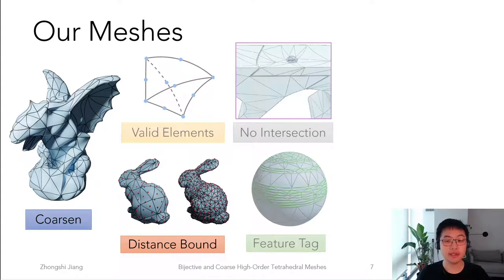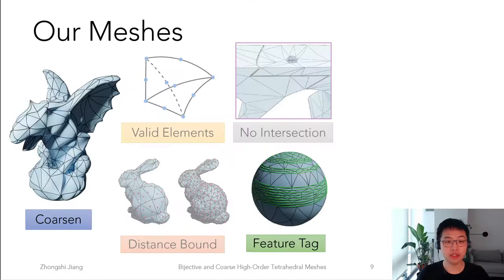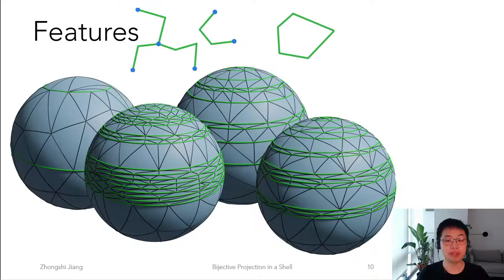In addition, the user can specify a set of points on the input surface, and they will have distinct corresponding points on the output, and their distance will be maintained below the specified threshold. Also, the user can set arbitrary edge chains or graphs from the input, and for the tagged edges, there will be a corresponding segment from the output high-order edges.